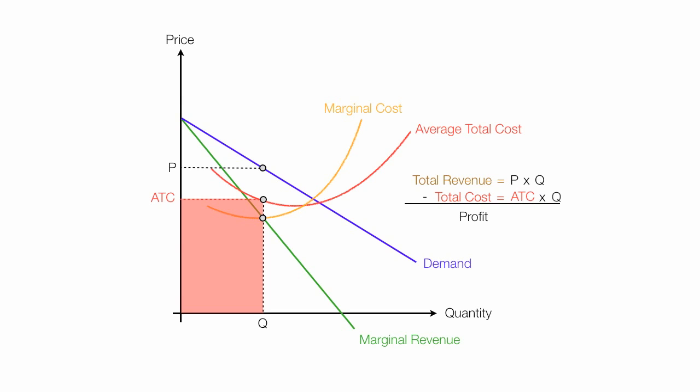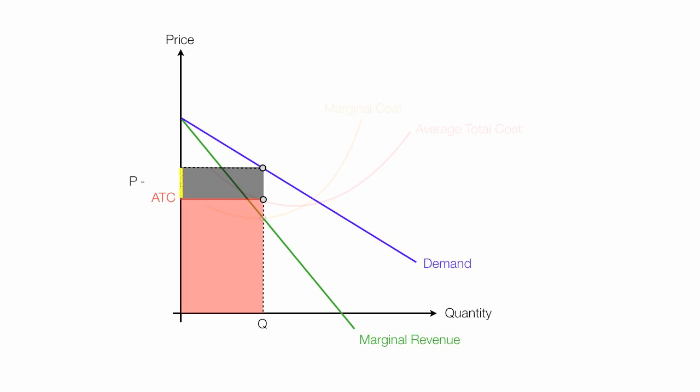And if I take total revenue minus total cost, that's the profit, which is that black area there, the area of that black rectangle, I should say. The height is P minus average total cost or price minus average total cost. The base is quantity again. So profit is equal to quantity times price minus average total cost. And again, profit is total revenue minus total cost.